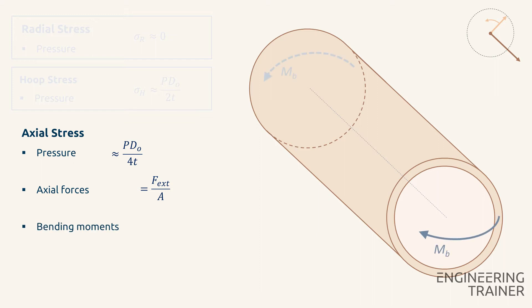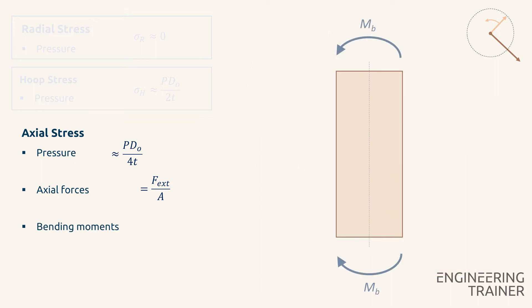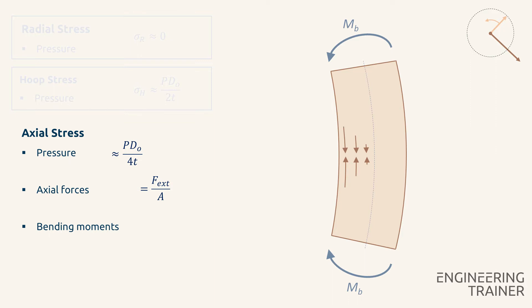Additionally, bending moments can cause axial stresses. If we consider a top view of a pipe piece to which a bending moment is applied, we find compressive stresses on one side and tension stresses on the other side. On the compressive side the stresses are negative and on the tension side the stresses are positive, similar to a beam under bending.